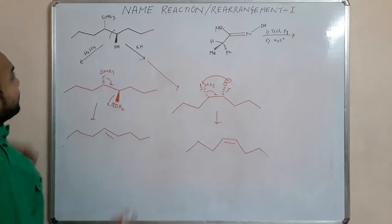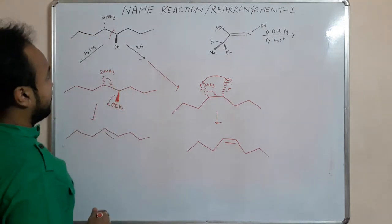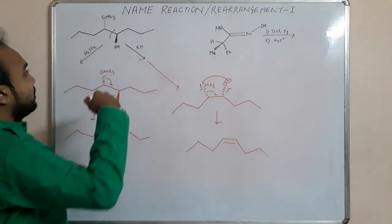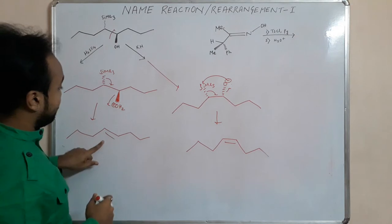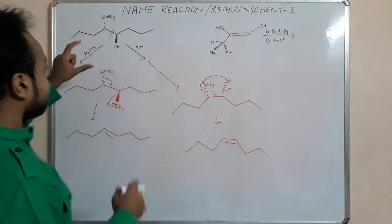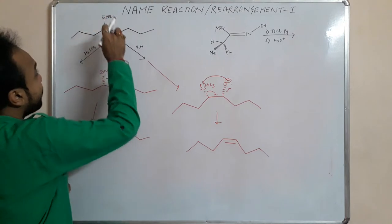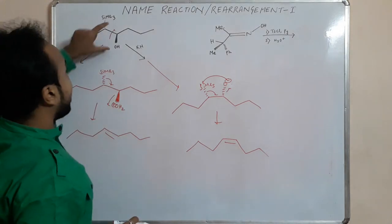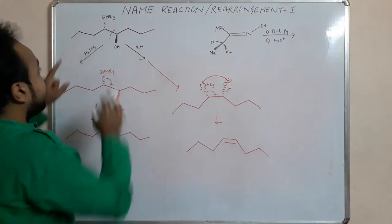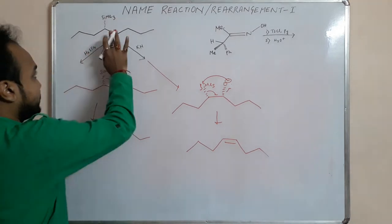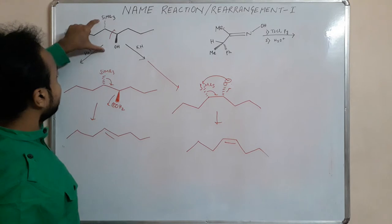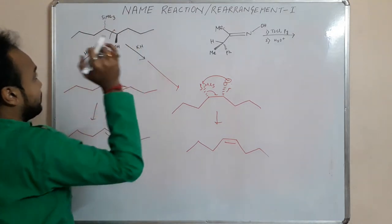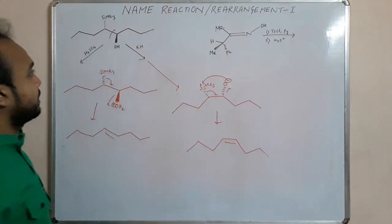If we have a different substrate, just one thing: don't try to mug up this, like only this configuration will give trans and this will give cis. Just try to focus on the SiMe3 or the silicon group and the OH group. If they are anti-periplanar and we add acid, then the system will not change. But if we add a base, then the system will change. In order to give this OH at the back side, we have to rotate this bond.